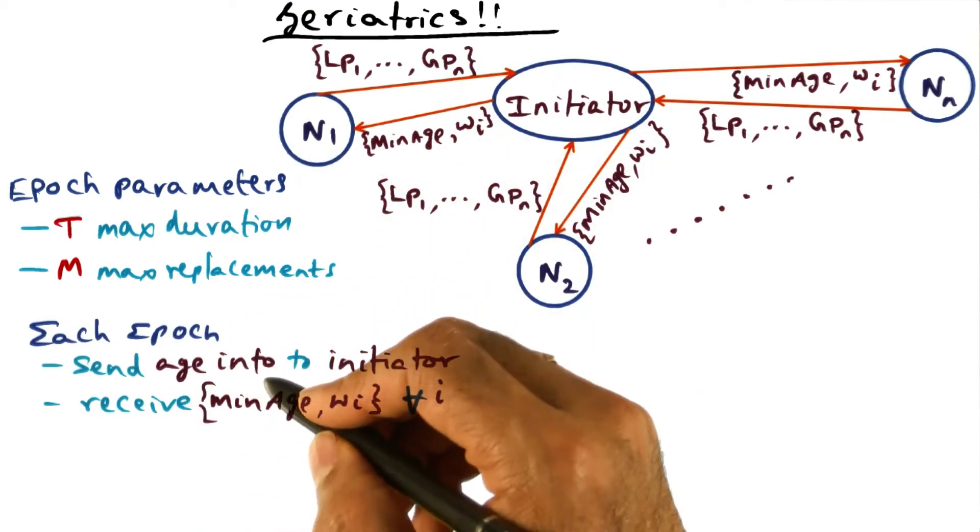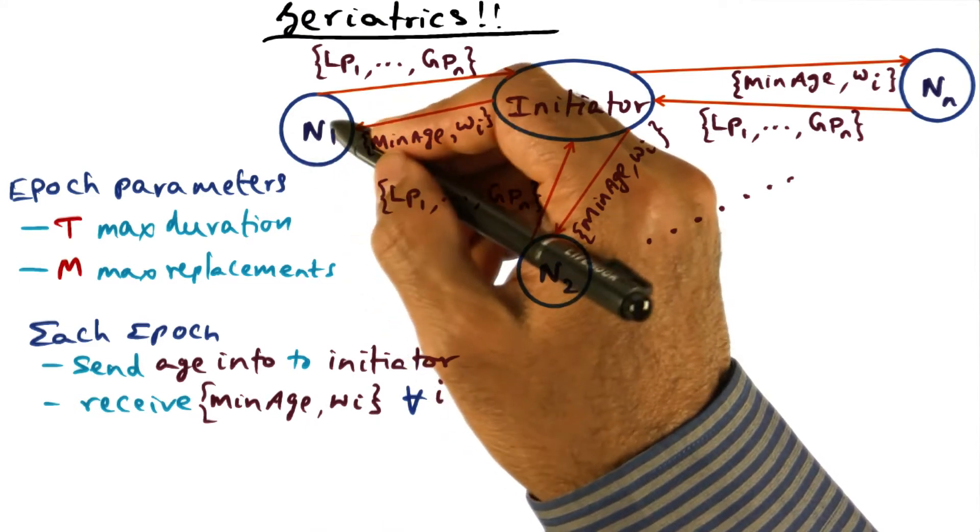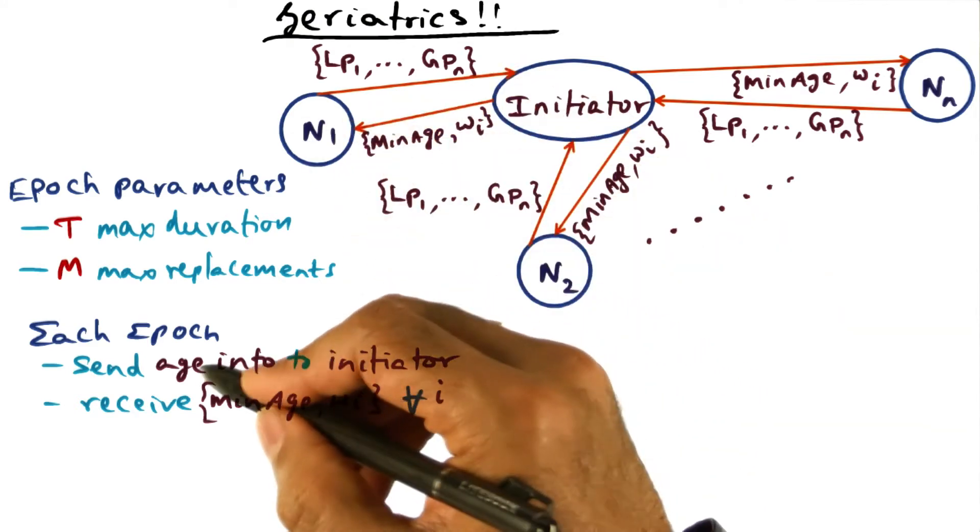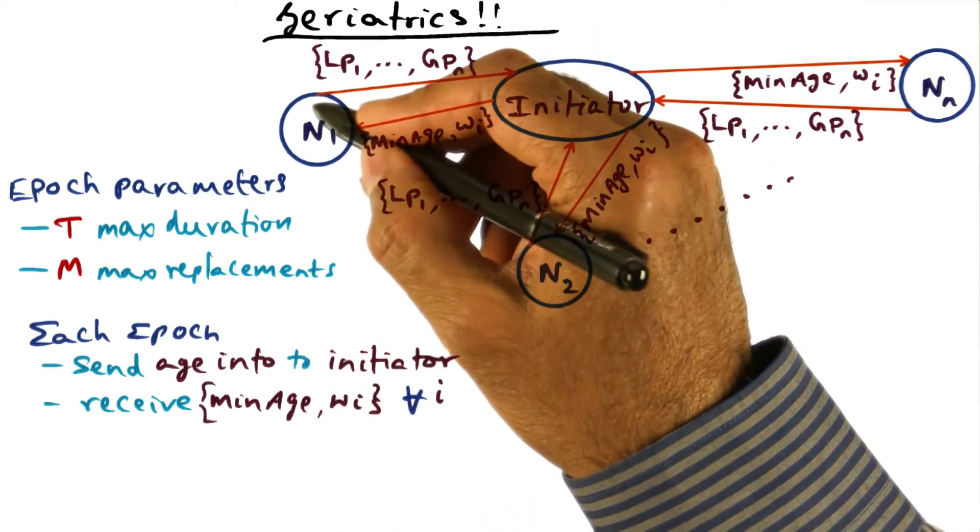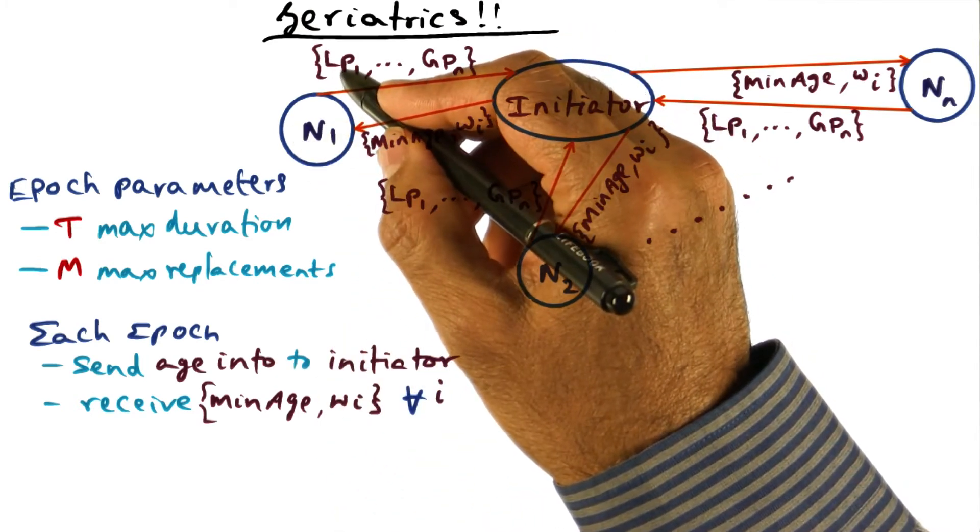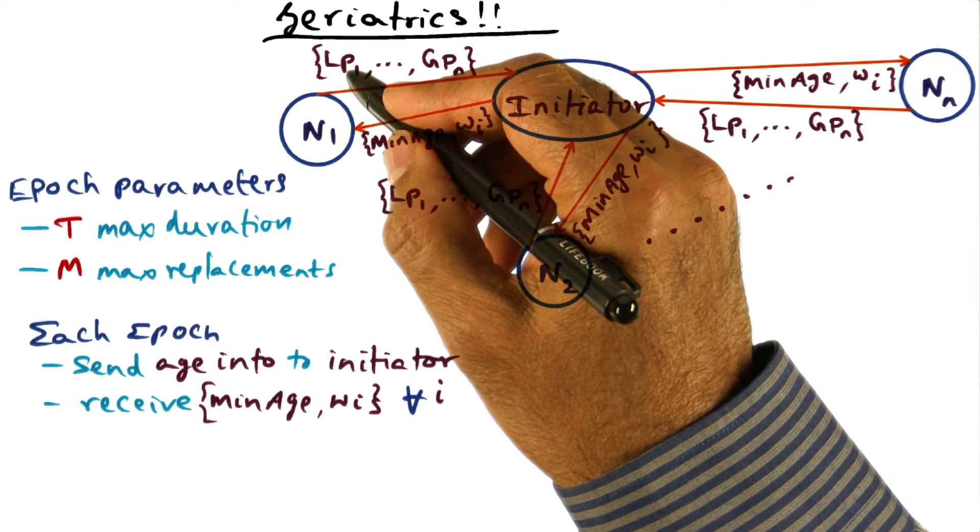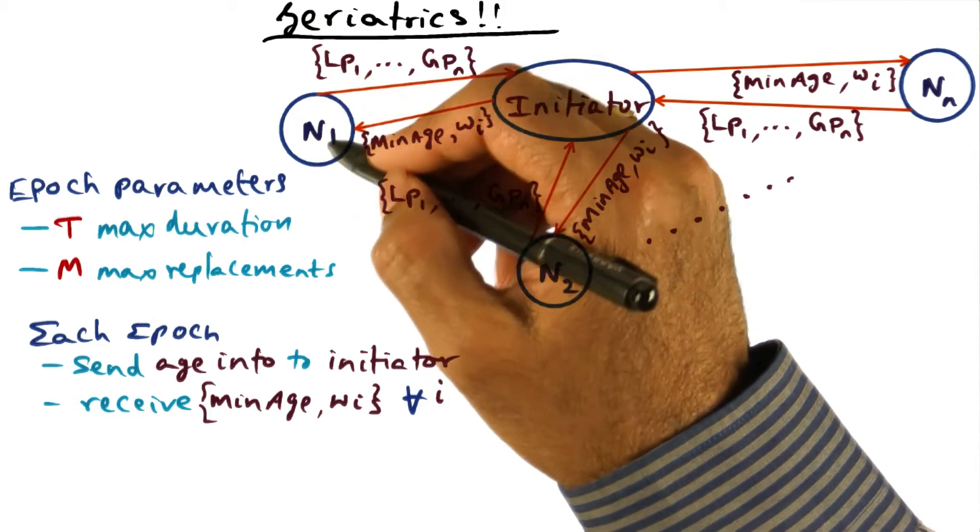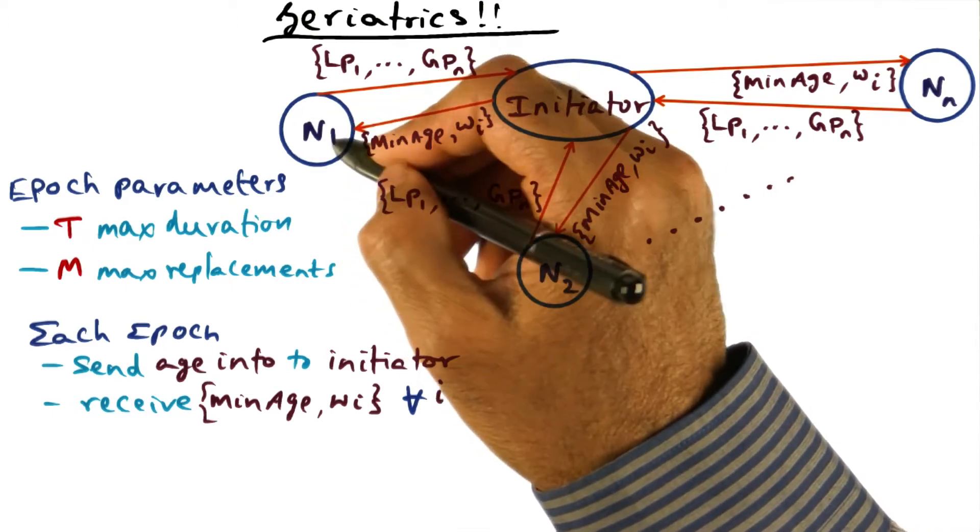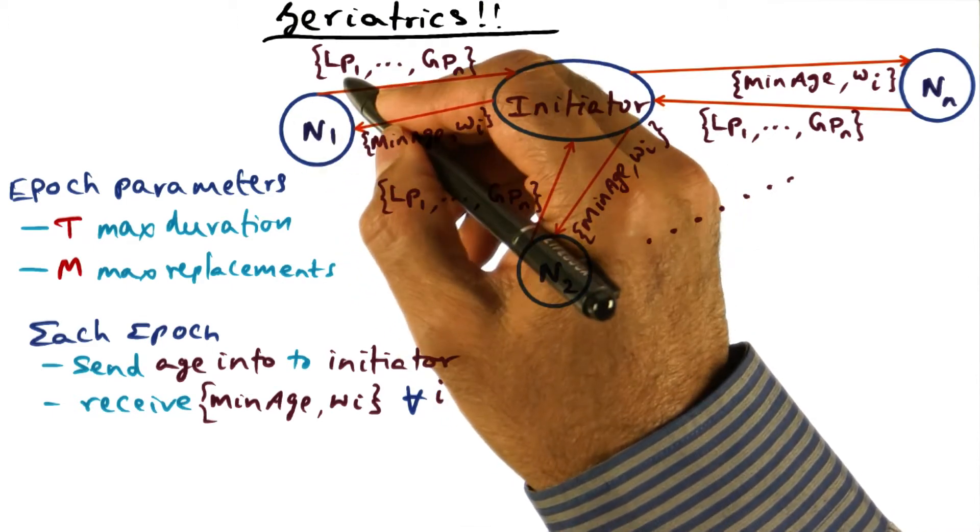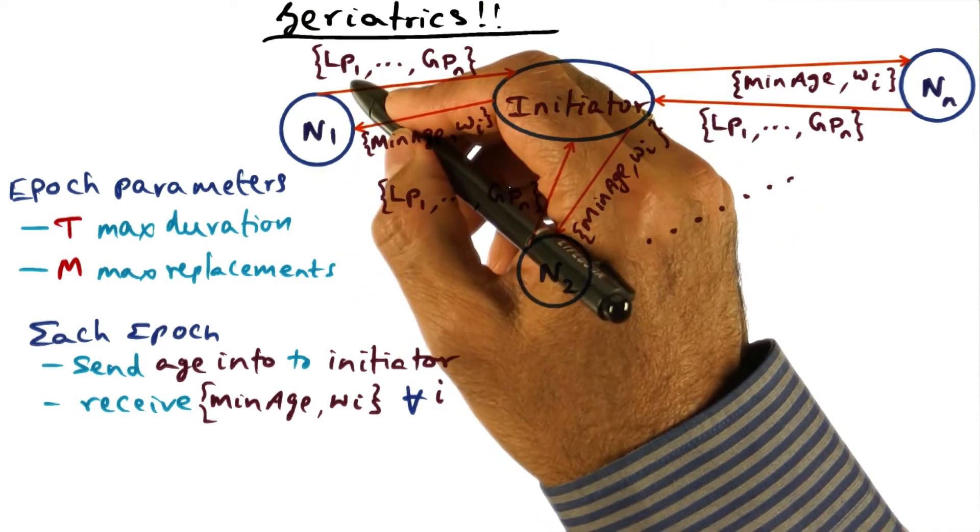So at the start of each epoch, what happens is every node is going to send the age information to the initiator. That is, every node is going to say, what is the age of the pages that is resident at this node. All the local pages, all the global pages. Universe of all the pages that exist at this node, what is the age information associated with that?